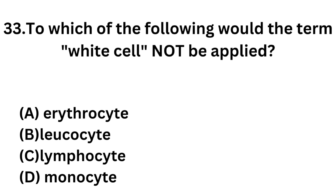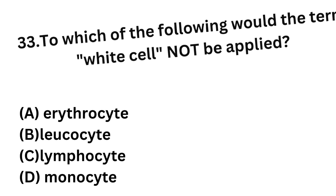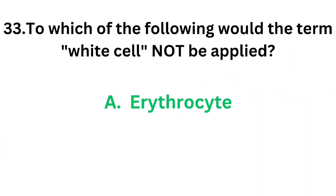Question number 33: To which of the following would the term 'white cell' not be applied? Option A: Erythrocyte. Option B: Leukocyte. Option C: Lymphocyte. Option D: Monocyte. The correct answer is Option A, erythrocyte. Erythrocyte is a red cell, not a white cell.